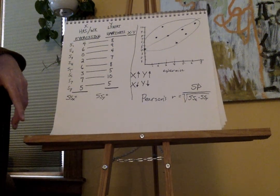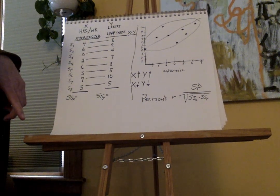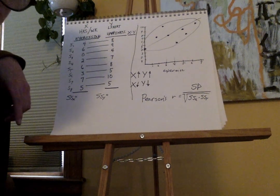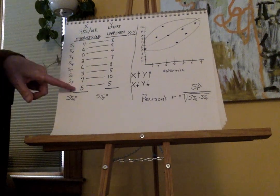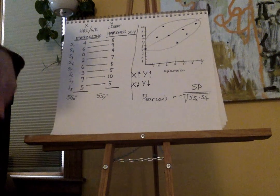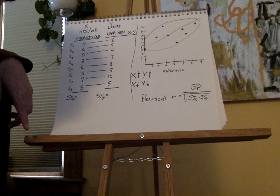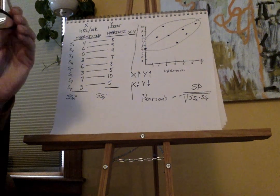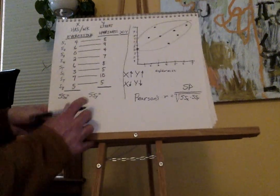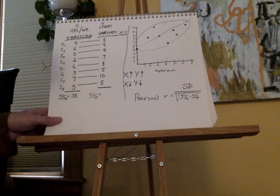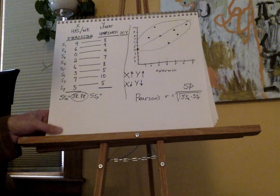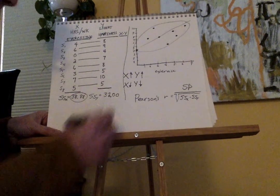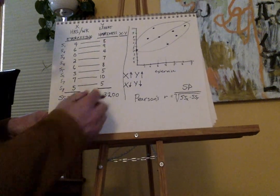I'd suggest you pause the video and see if you can get the sum of squares for x and the sum of squares for y. The sum of squares for x is 38.88. Hopefully you've got that number. The sum of squares for y is 32.00. Those numbers will go into the formula eventually.